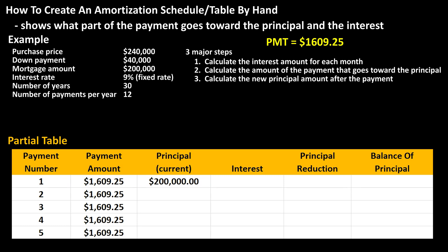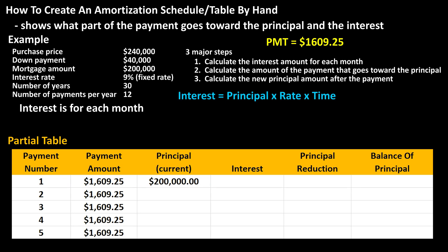The fourth column — the interest amount — is the interest amount for one month on the current principal, and this number will change each month. The formula is: interest equals principal times rate times time. For payment number 1, we have interest equals $200,000 times 0.09, the yearly rate, times 1/12, because we're calculating the interest accrued over one month and the rate is given as a yearly rate, not a monthly rate. Calculating out, we get $1,500 as the interest amount, and we can put that in the table.